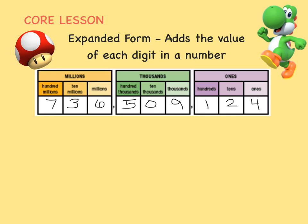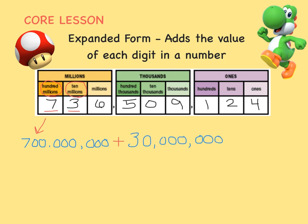Let's start from the biggest place all the way on the left and work right. The seven is in the 100 million's place, so it has a value of 700 million. Let's add the value of the next digit. The three is in the 10 million's place, so its value is 30 million. The six is in the million's place, so its value is 6 million.